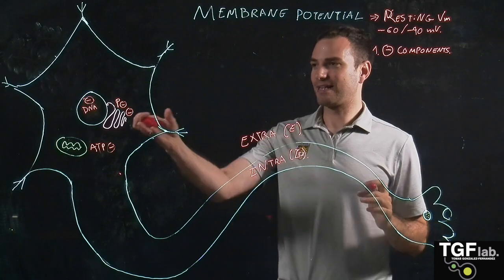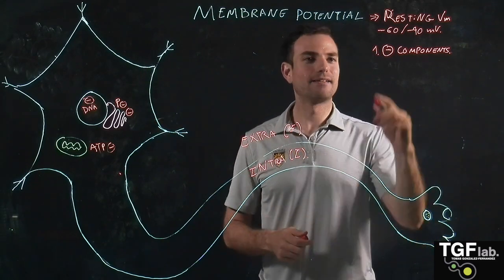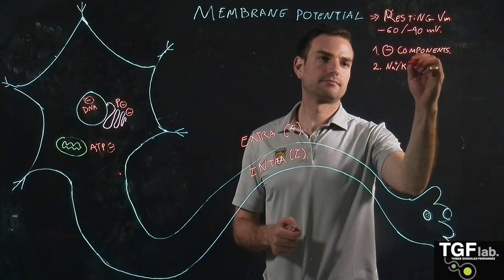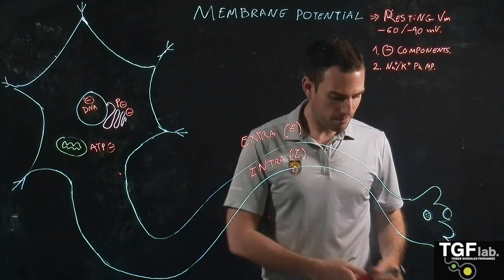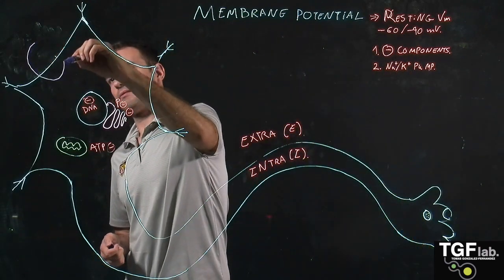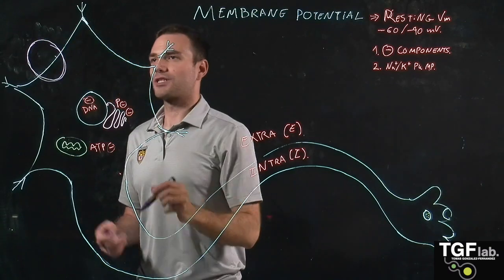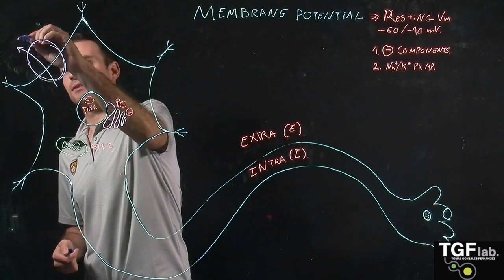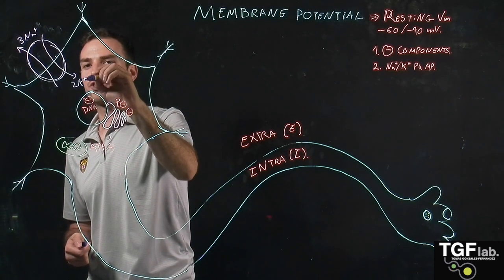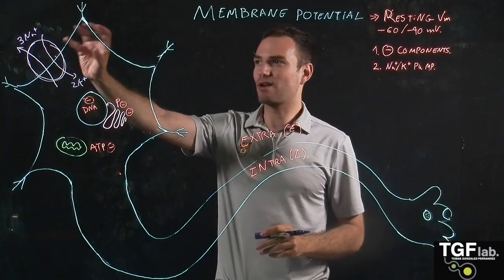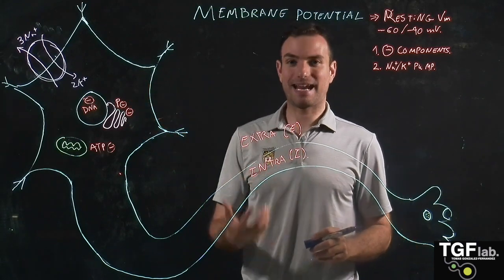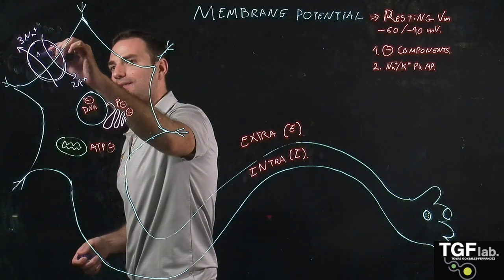In combination with these negatively charged components, we also have the sodium-potassium pump. This pump is an ATP pump — a transmembrane protein, a transporter. It sends outside the cell three ions of sodium and brings in two ions of potassium. Because it is sending out three positively charged ions and only bringing in two, this contributes to making the inside of the cell more negative. ATP is consumed in this process.